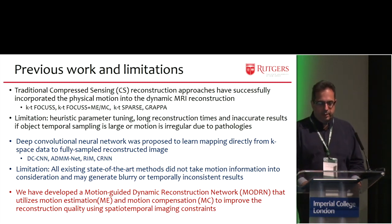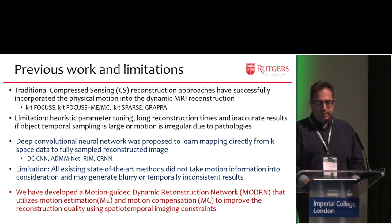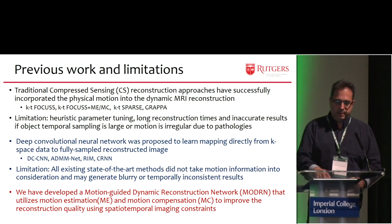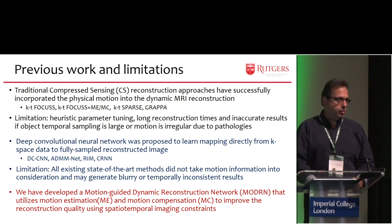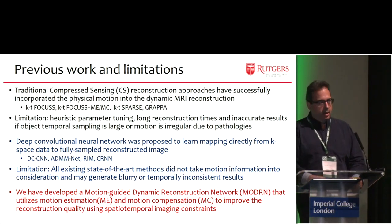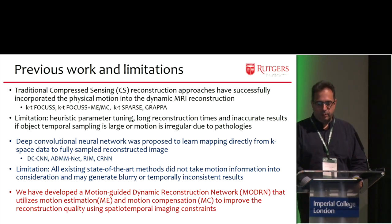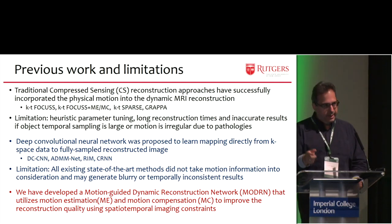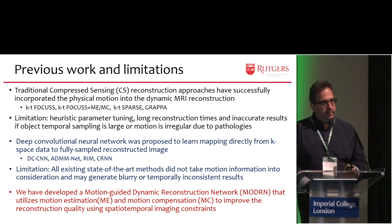That's the reason why sparsity, even though there was a lot of hope, didn't produce the results we wanted. On the contrary, deep convolutional networks were proposed to learn the mapping directly from k-space to fully sampled reconstructed images. The limitation is that all these existing state-of-the-art methods do not take into account the motion information — the heart moves — and may generate blurry or temporally inconsistent results. So I'm going to show you today the first motion-guided dynamic reconstruction network that utilizes motion estimation and motion compensation to improve reconstruction quality using spatiotemporal imaging constraints.